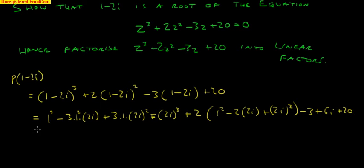Which equals, now making it all look as simple as I can, that's 1 and that's 1, 3 times 2 is 6i so it's minus 6i. 2 squared is 4, 4 times 3 is 12 and that's i squared. 2 cubed is 8 so it's minus 8i cubed.